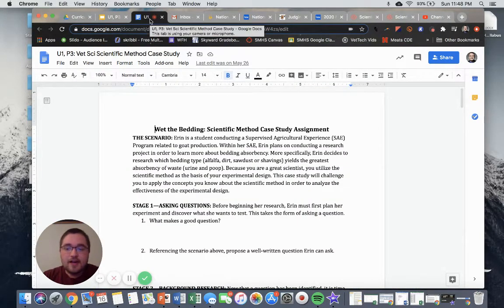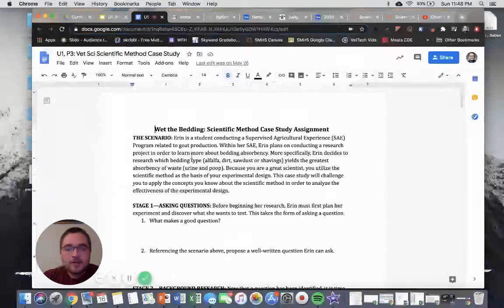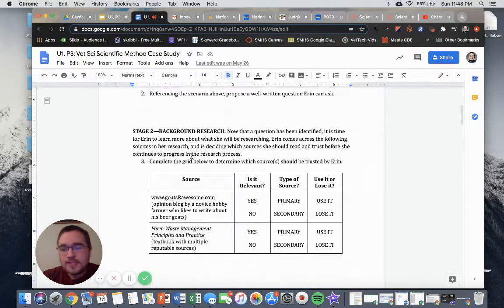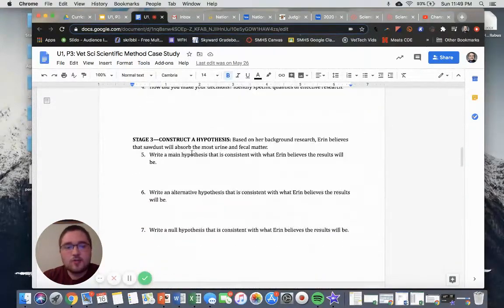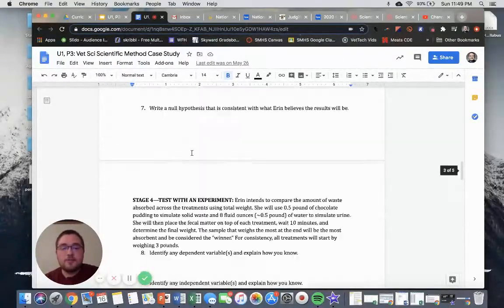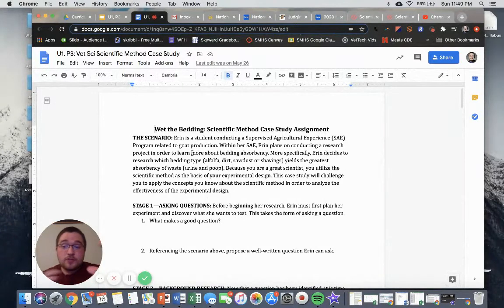Each course has a different case study option. For veterinary science students, you will have the wet the bedding case study, which talks about absorbency of different bedding types and animals. Natural resources is a different case study, and Intro to Ag Science is a different case study. Go ahead and access this case study on Google Classroom or you should have a hard copy available to you as well. Use this as a tool to help you take notes and jot some ideas down as you go through the different stages. I will direct you to hit pause at certain points to do some different thought questions and to complete this worksheet as well.